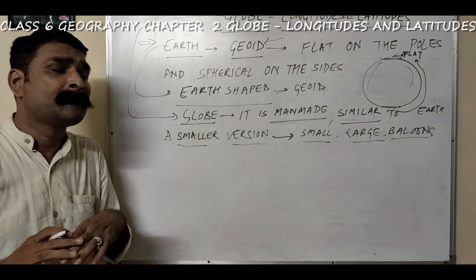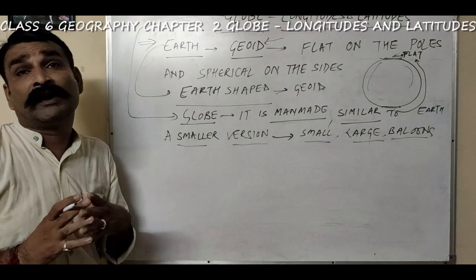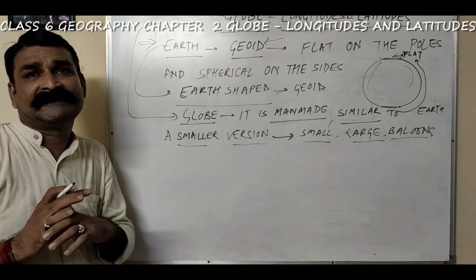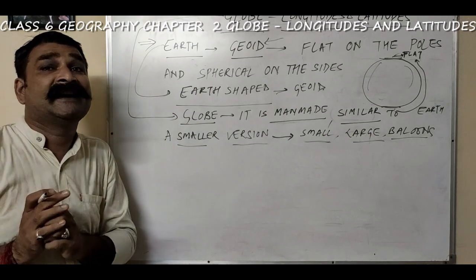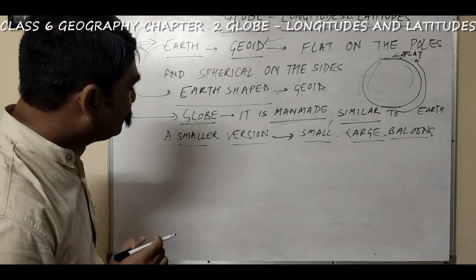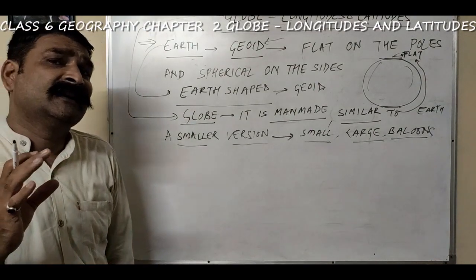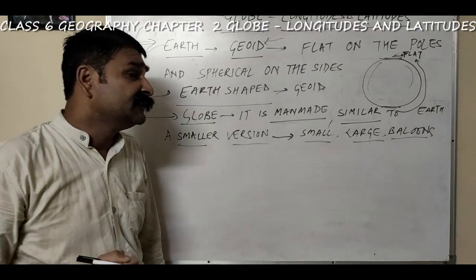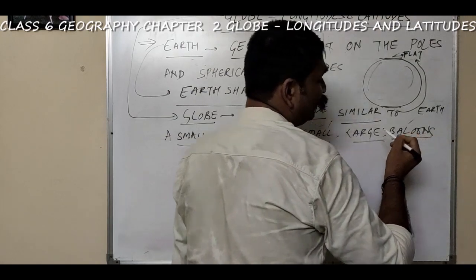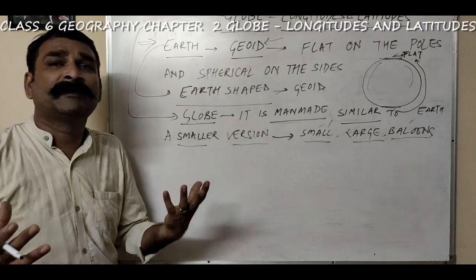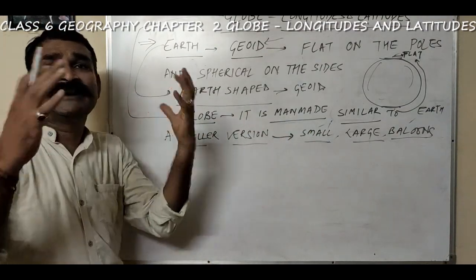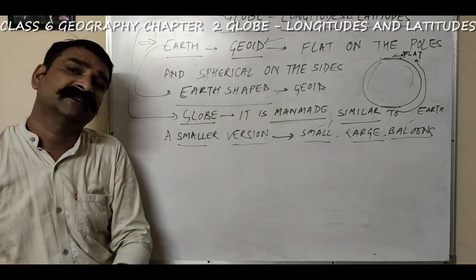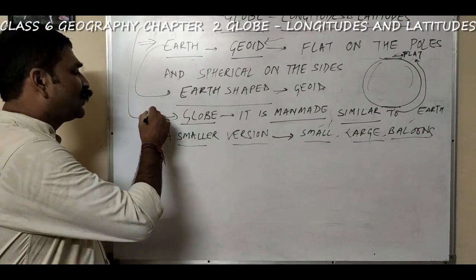There are drawbacks of a globe also — it cannot be carried from one place to another easily, and the location is not very exact; there are some discrepancies. However, the smaller globes and the globes available in the form of balloons can be carried easily. You blow air, it takes the shape of a globe, and when you remove the air, you can fold that globe and put it in your pocket.